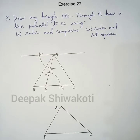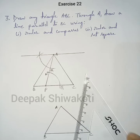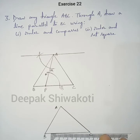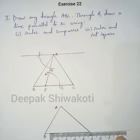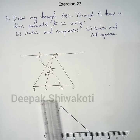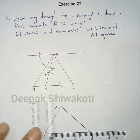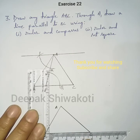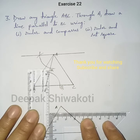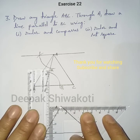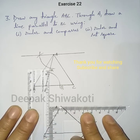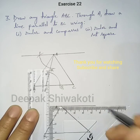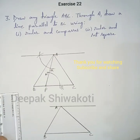Take a set square and place it along BC. Take the ruler and place it alongside the set square. Now move the set square up to point A and make a line parallel to BC. Very simple using the set square!